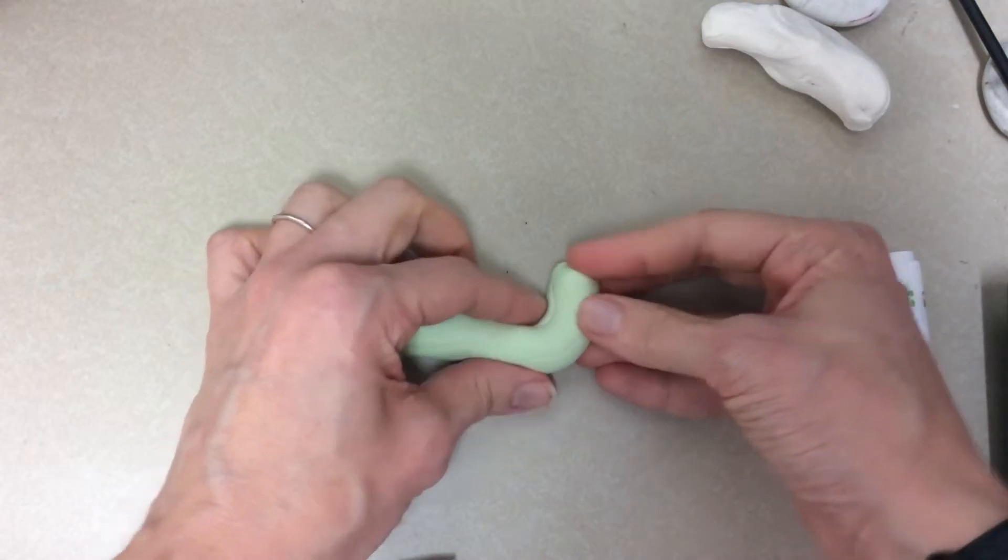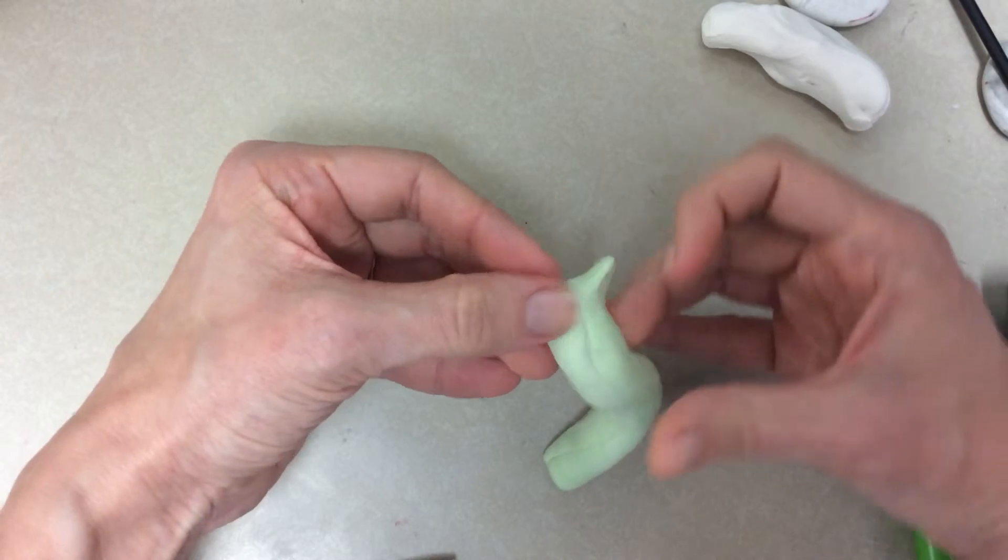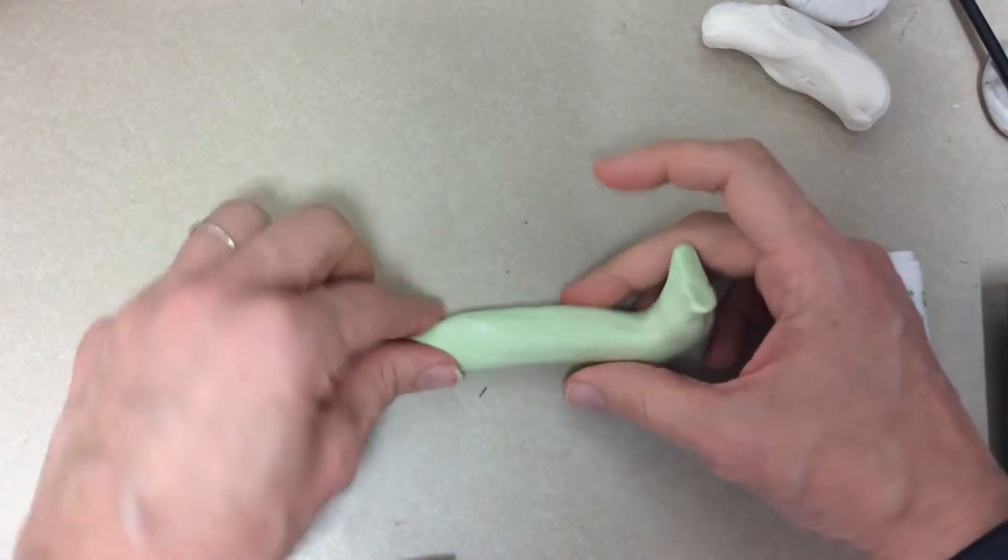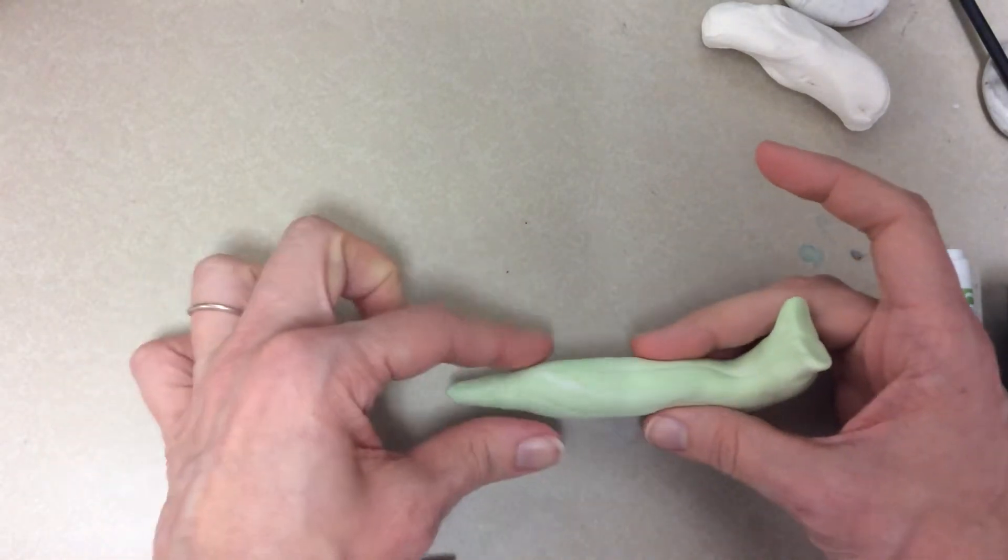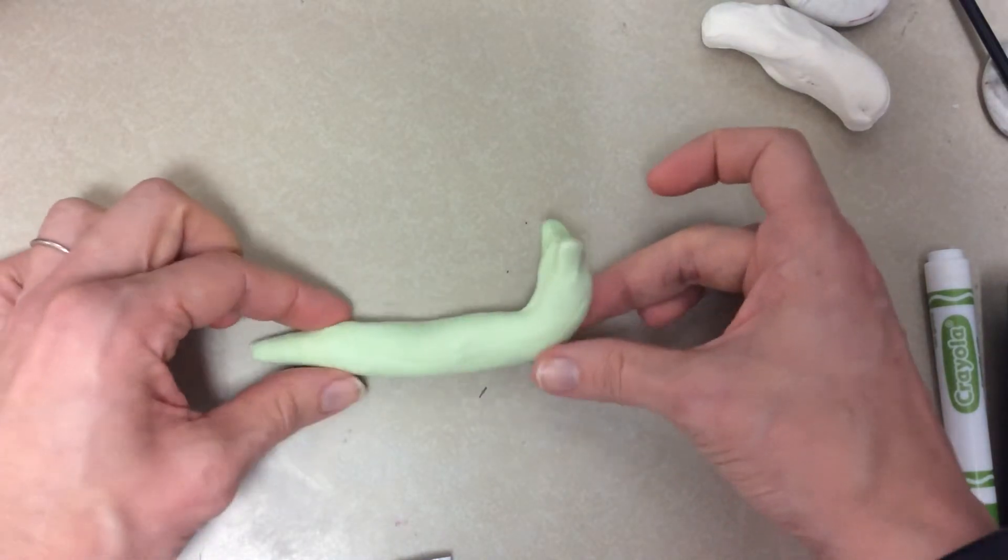And then I'm going to bend this side up for my snail's head and pull, pinch and pull just for a couple little antenna for his little head there. And then if you want the tail to be smaller you can always make it generally getting smaller. And this is all you need for your snail body.